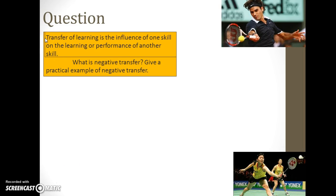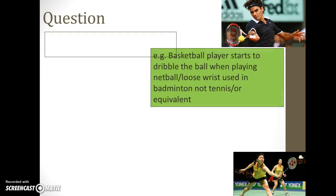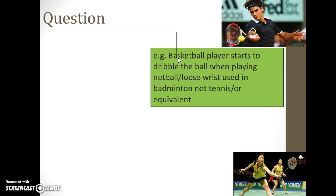Next question: transfer of learning is the influence of one skill on another — what is negative transfer? Give a practical example. Negative transfer is where one skill inhibits the ability to learn a new skill. Examples include: a basketball player starting to dribble when playing netball, or the loose wrist used in badminton having a negative effect when transferring to tennis.